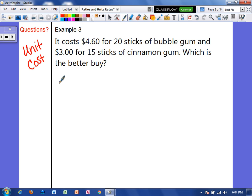So for the bubble gum, it costs $4.60 for 20 sticks. So we want to take the money and divide it by the unit. So I'm going to put top dog in the house and we are going to divide.